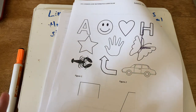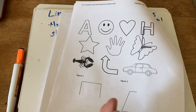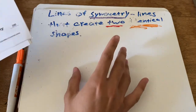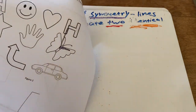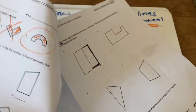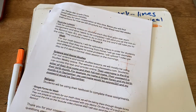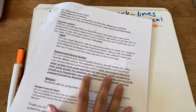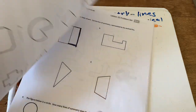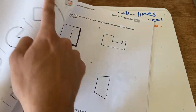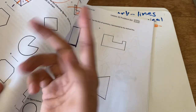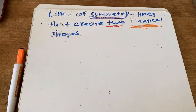That is it for our math. If you need to, you can go ahead and rewind to see the examples we did. Please be sure to complete your math exit ticket. Once you've figured out how lines of symmetry work, it's kind of like solving a puzzle — it's fun!